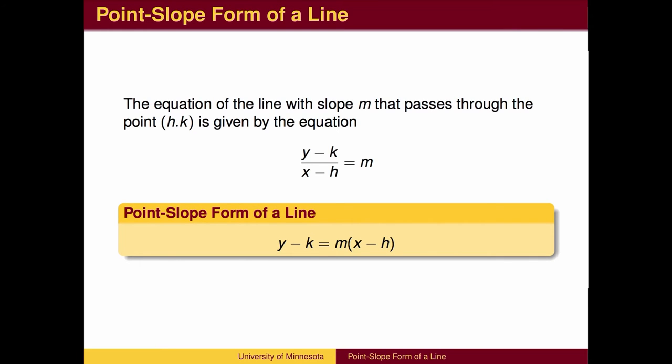In general, the point-slope equation of the line with slope m that passes through the point (h,k) is given by the equation y minus k equals m times x minus h. That is, y minus the y-coordinate equals m times x minus the x-coordinate.